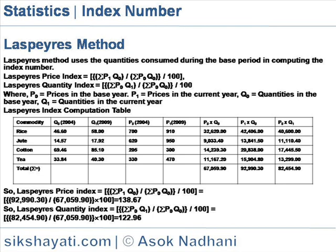The Laspeyres price index is equal to (sigma P1Q0 / sigma P0Q0) × 100. The Laspeyres quantity index is equal to (sigma P0Q1 / sigma P0Q0) × 100.